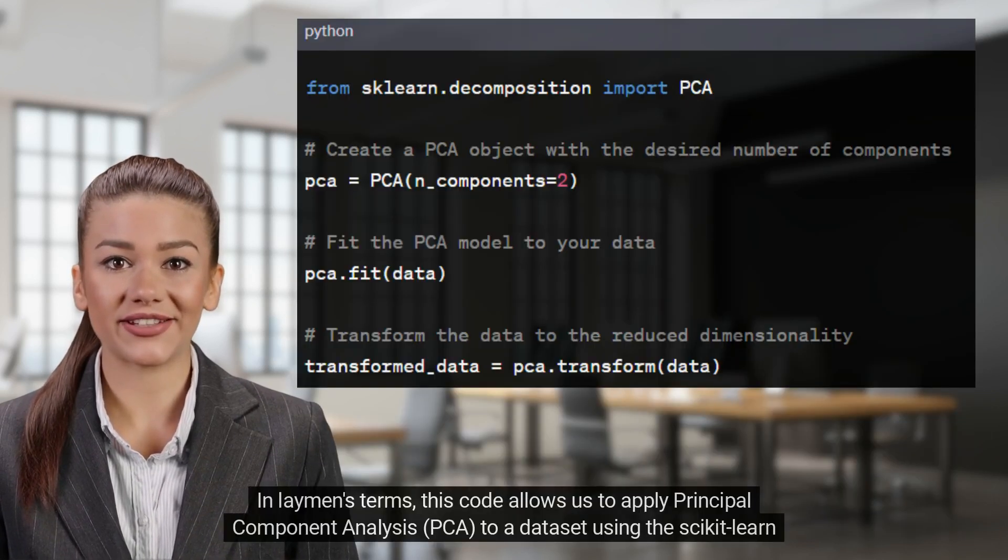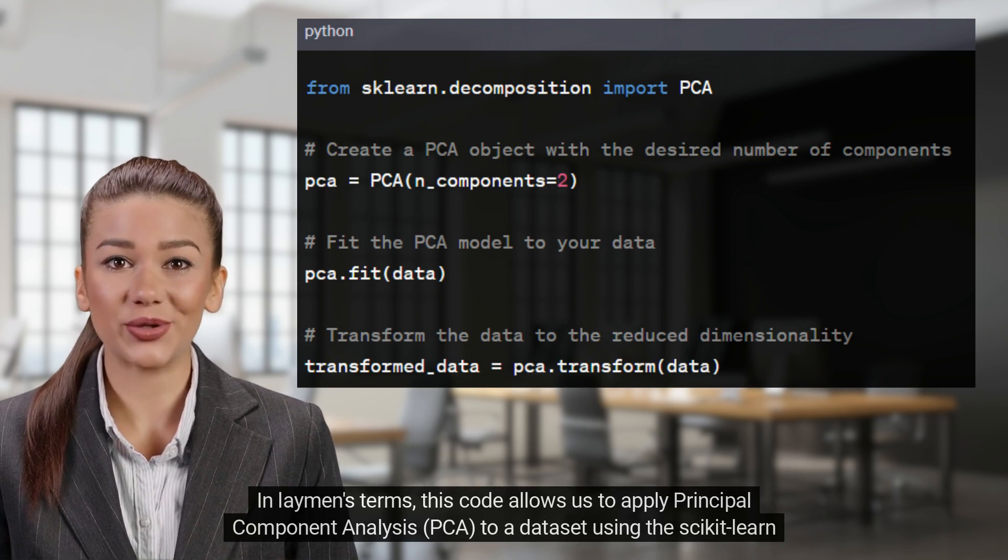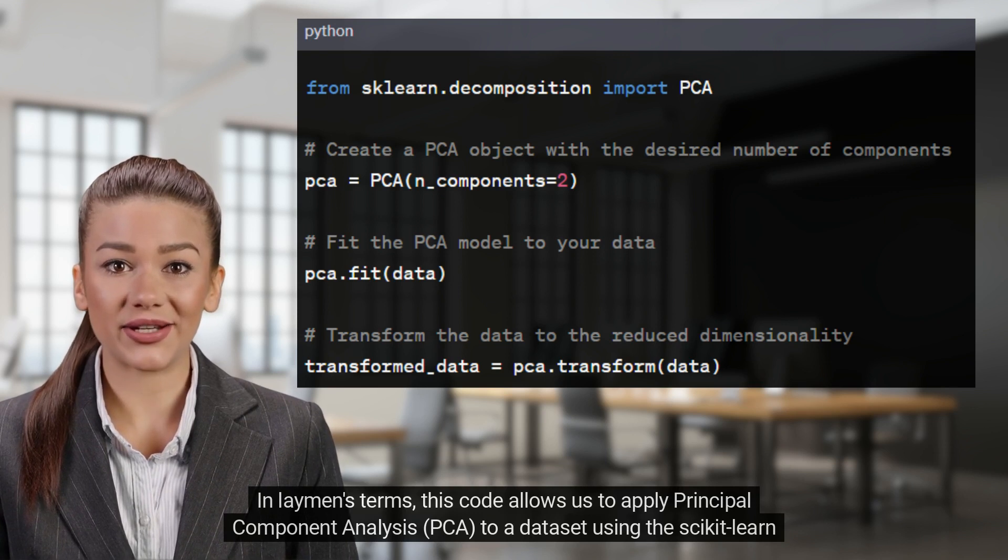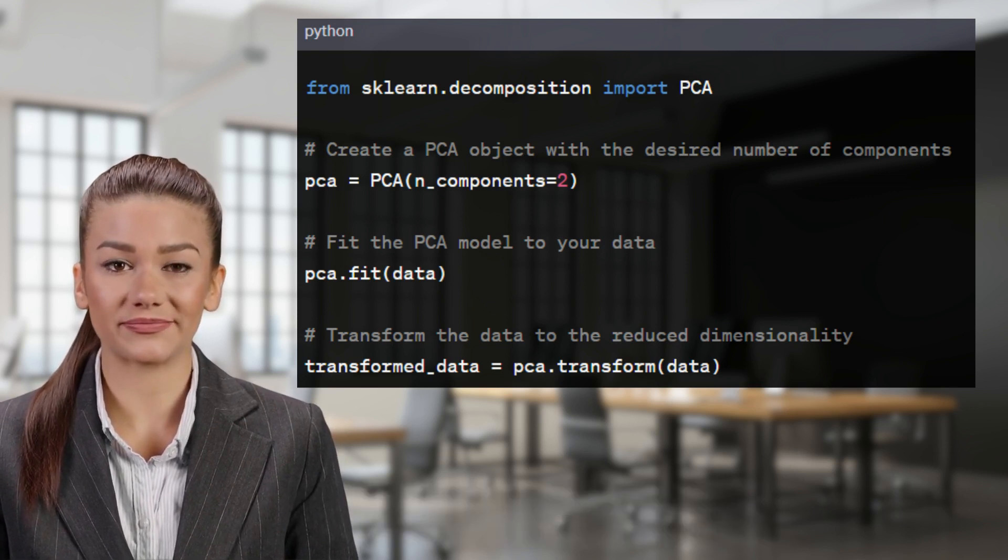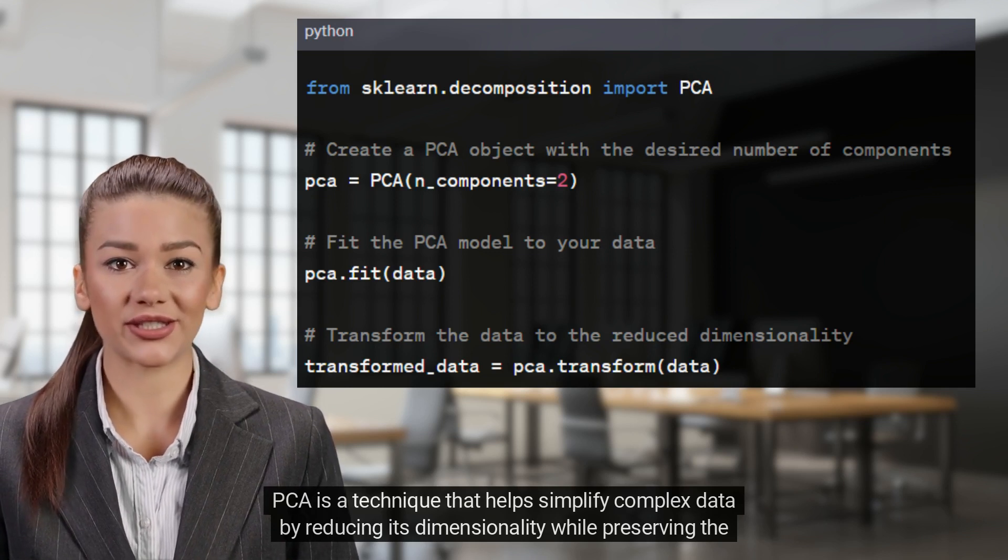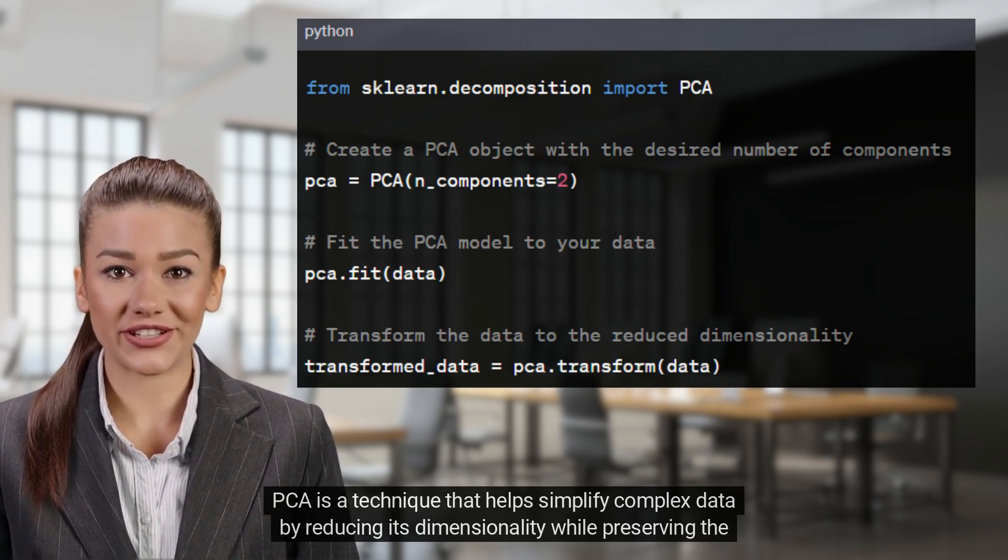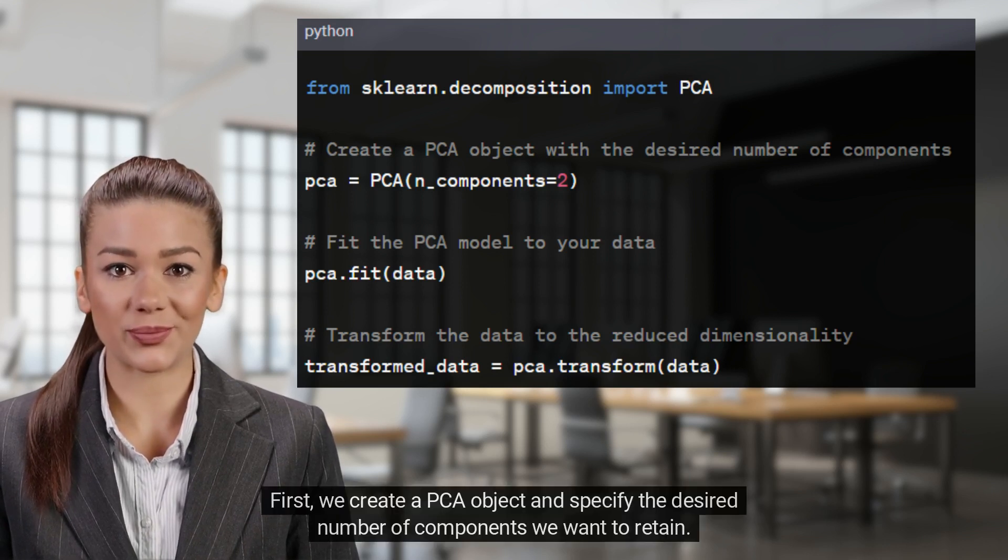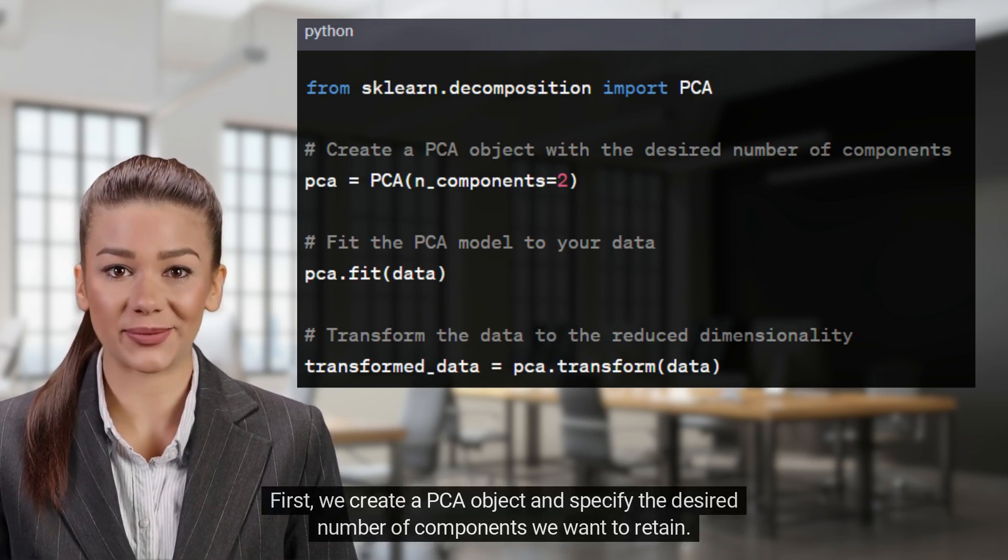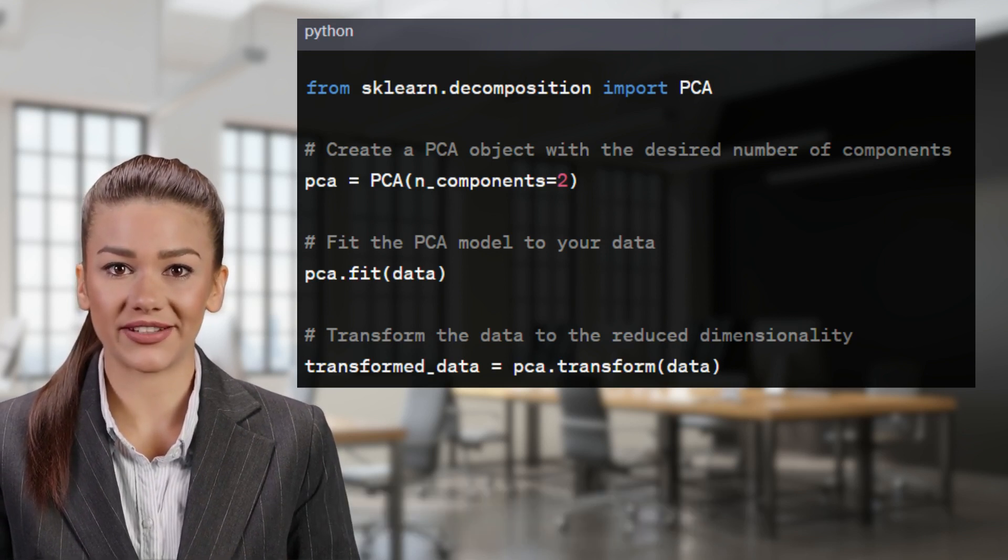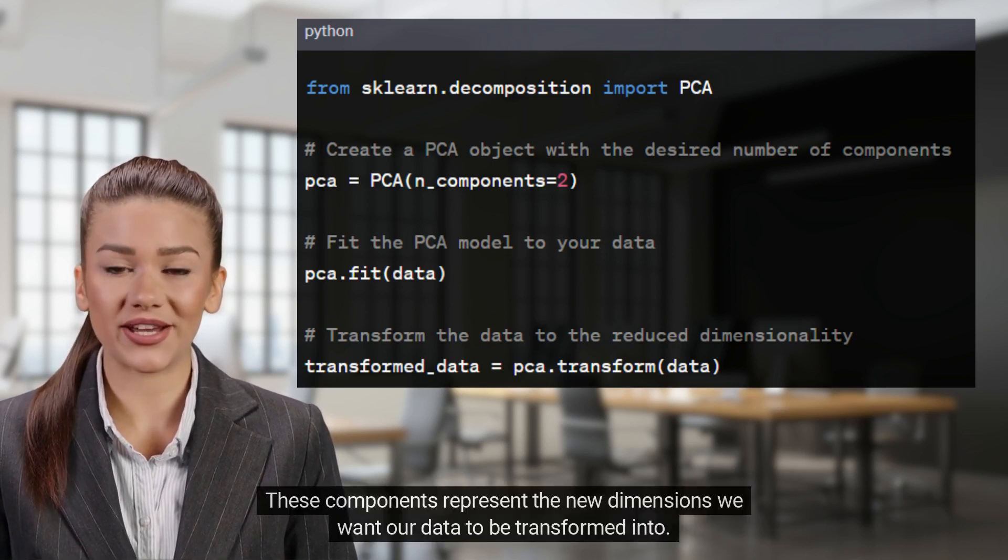In layman's terms, this code allows us to apply principal component analysis, PCA, to a dataset using the Scikit-Learn library in Python. PCA is a technique that helps simplify complex data by reducing its dimensionality while preserving the most important patterns and relationships. First, we create a PCA object and specify the desired number of components we want to retain. These components represent the new dimensions we want our data to be transformed into.